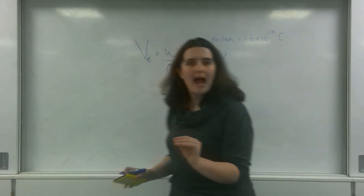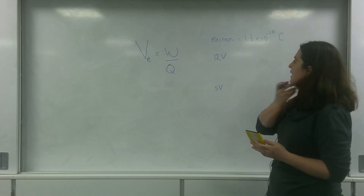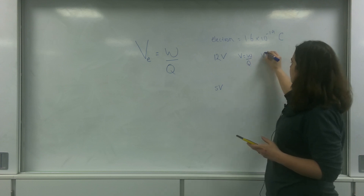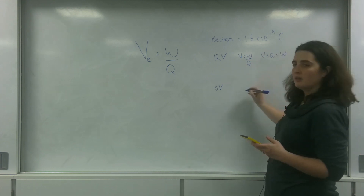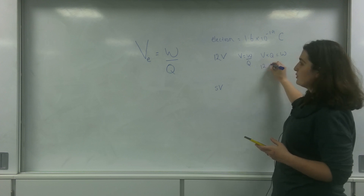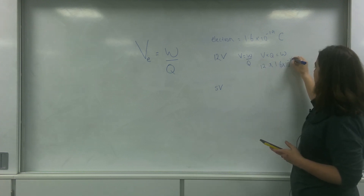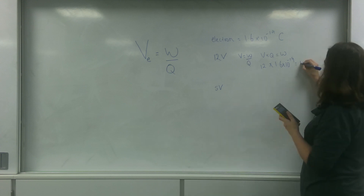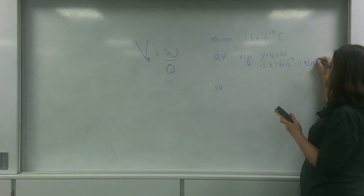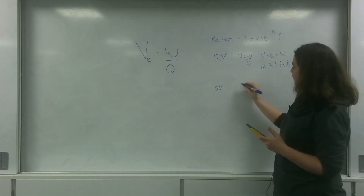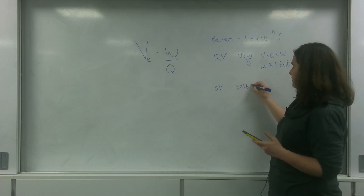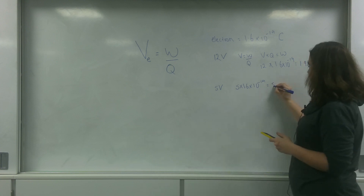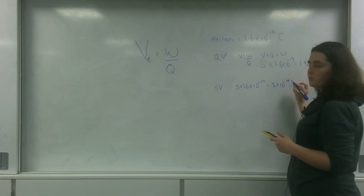Let's work out the energy that the electron would feel. Potential is energy over charge, so potential times charge gives the energy. For the 12 volt circuit: 12 times 1.6 times 10 to the minus 19 equals 1.92 times 10 to the minus 18 joules. For the 5 volt circuit: 5 times 1.6 times 10 to the minus 19 equals 8 times 10 to the minus 19 joules.